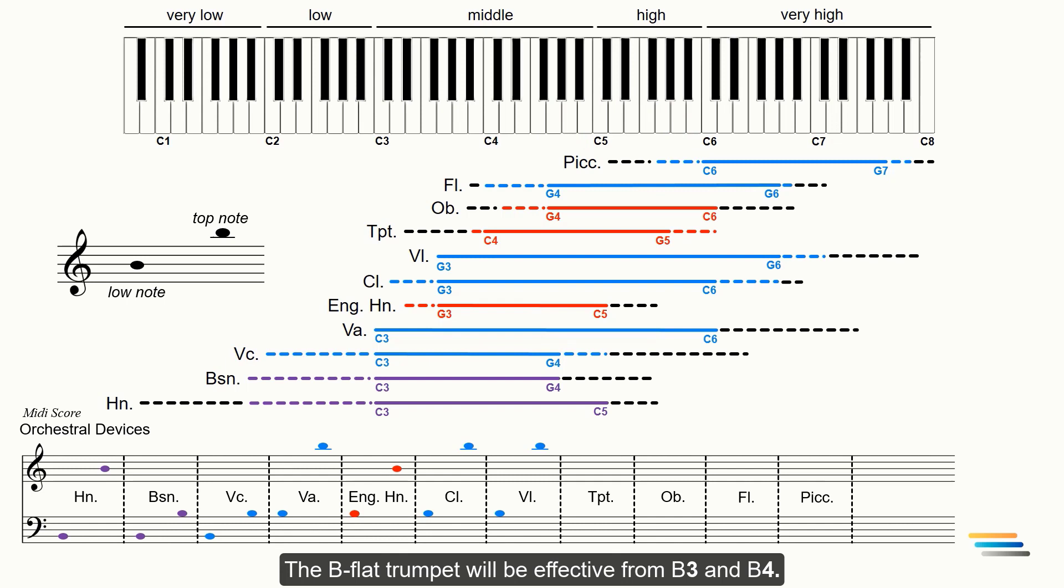The Bb trumpet will be effective between B3 and B4 and between B4 and B5. The oboe effectively plays this melody between B4 and B5. The one octave lower doubling will be poor.